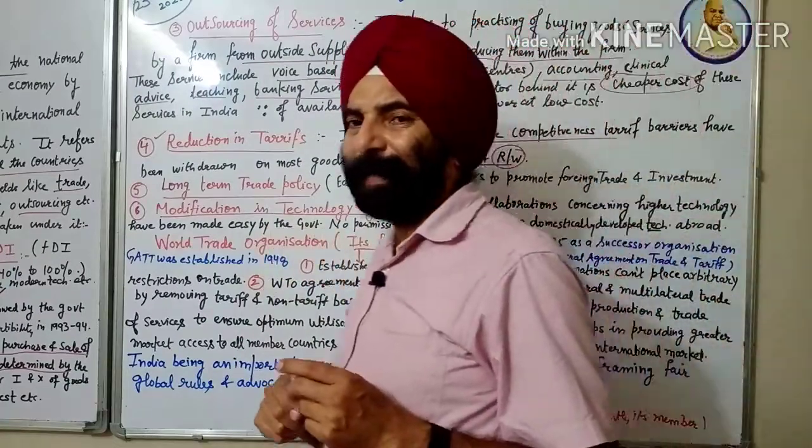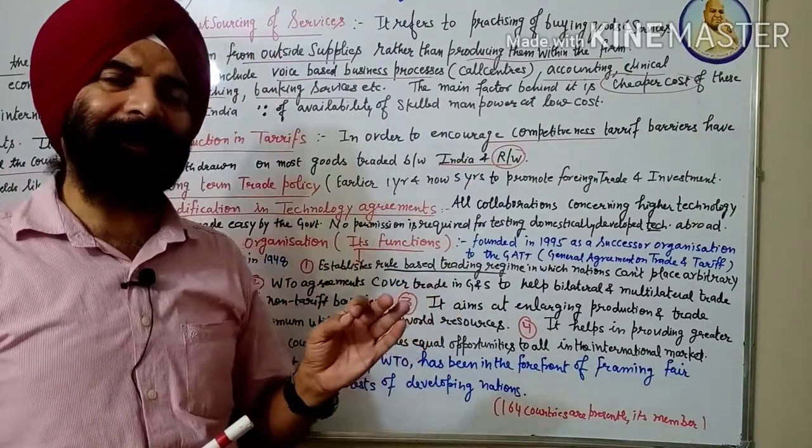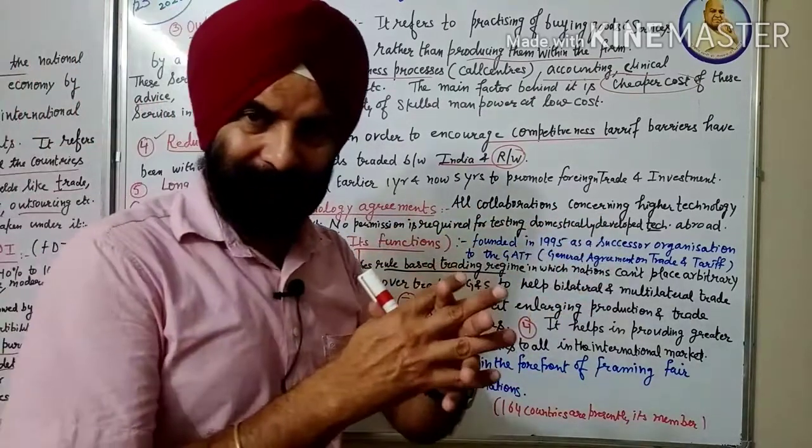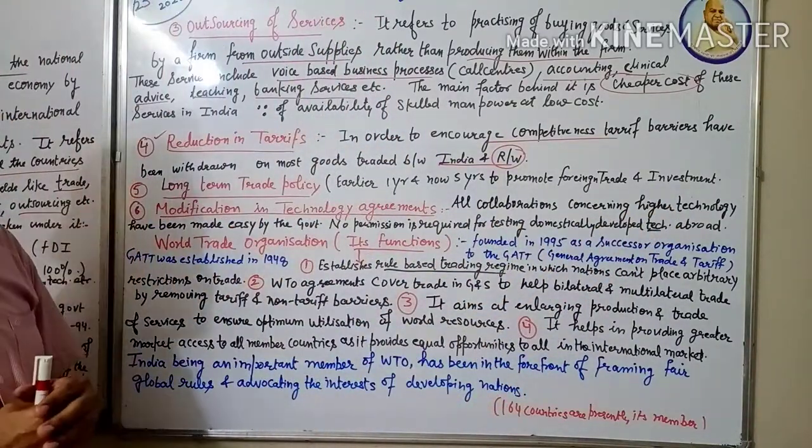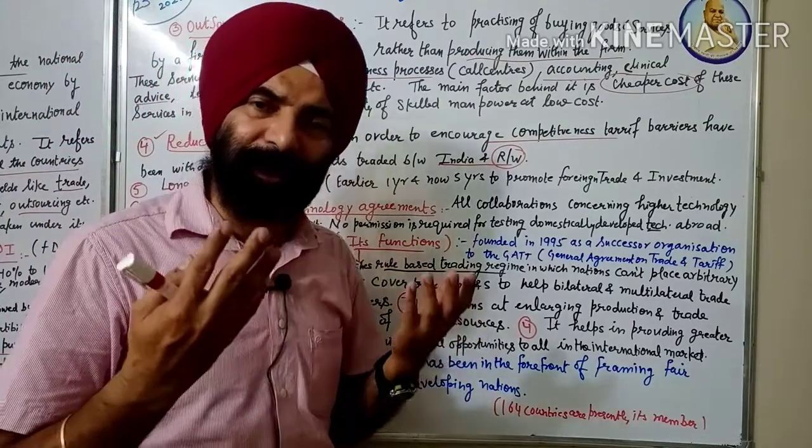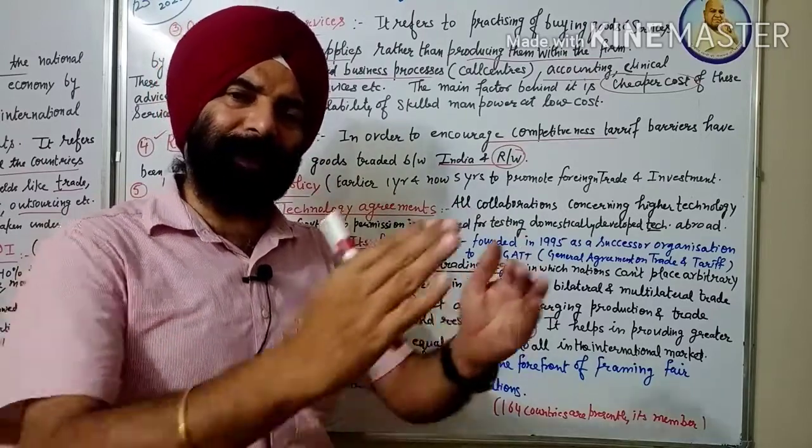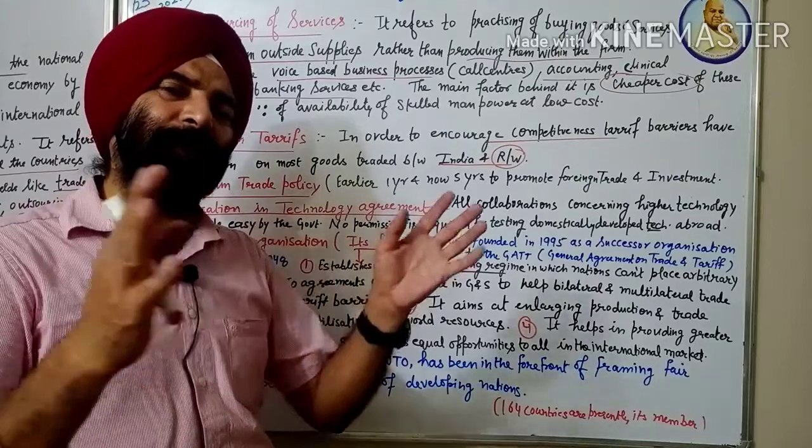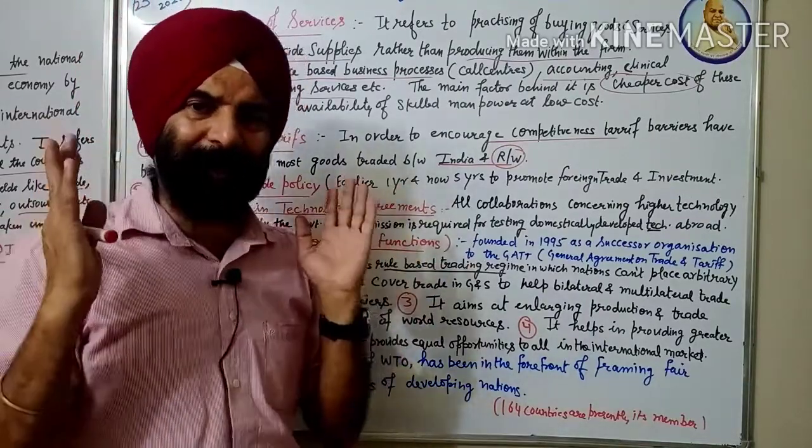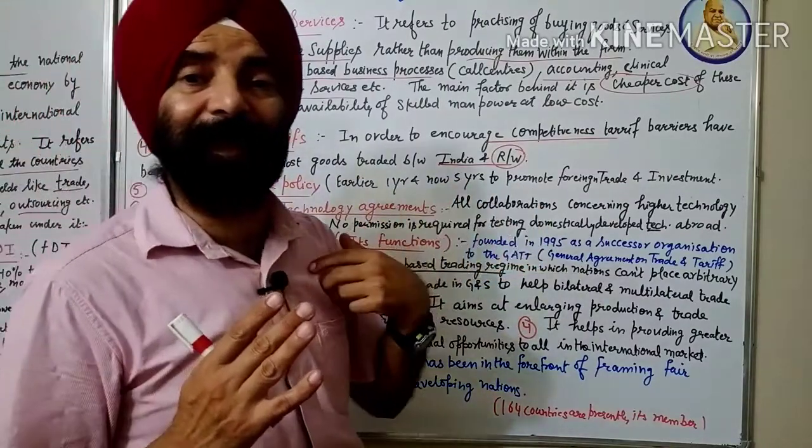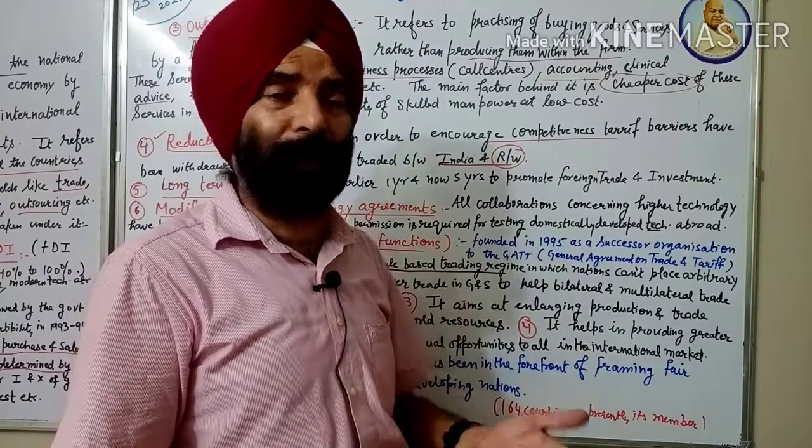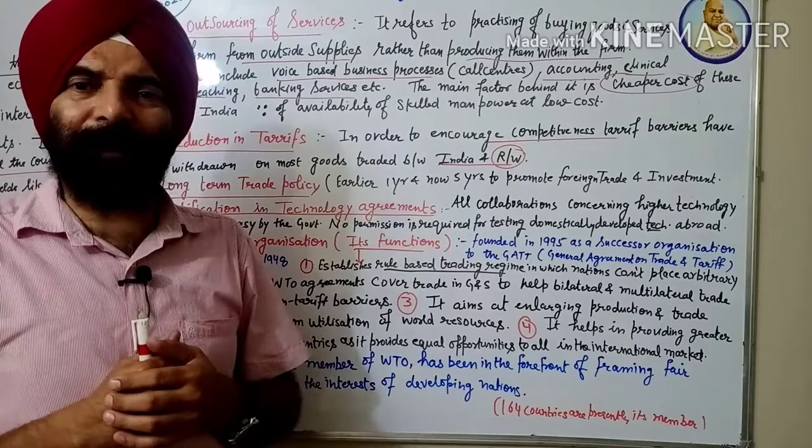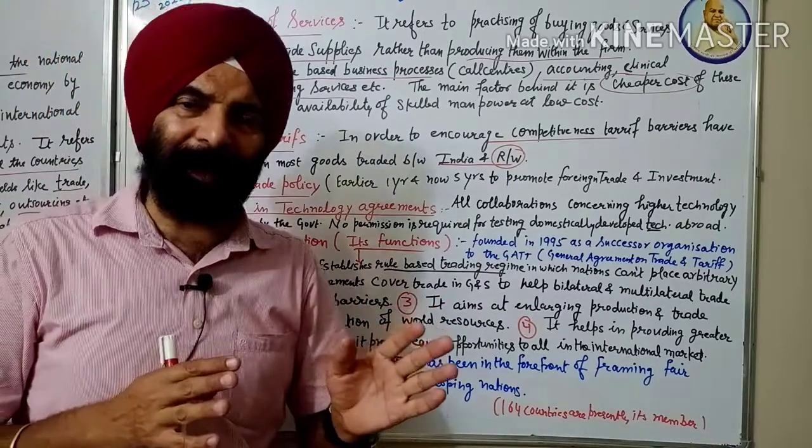After that one more reform was done: modification in the technological agreements. The technology agreement was modified, some changes were made. What was done? All the collaborations concerning higher technology have been made easy. If I need high technology to uplift my country, I can very easily order it from outside. Earlier it was not like this - government permission was needed, red tapism, bureaucrats and all, it was a very long process. Now this process has been simplified. And no permission is required for testing domestically developed technology abroad. If we have developed some technique in our country and we want to apply it outside, our reforms will benefit. Government removed all these restrictions.